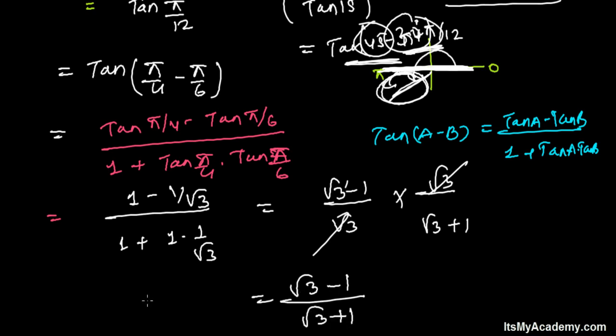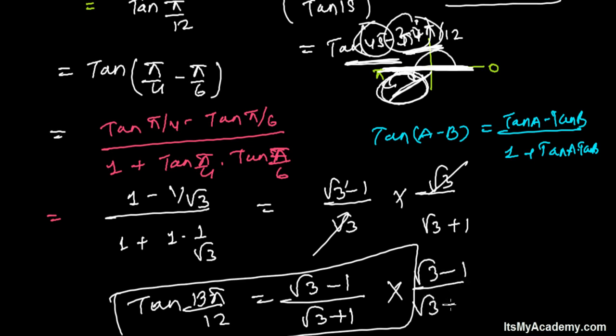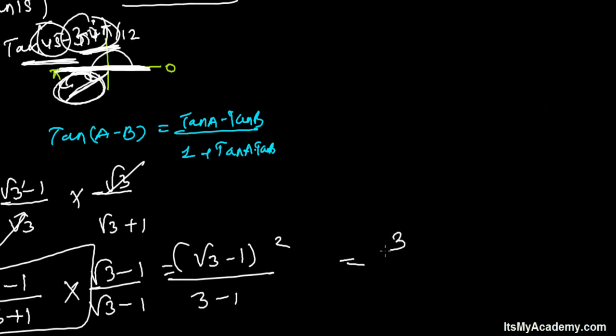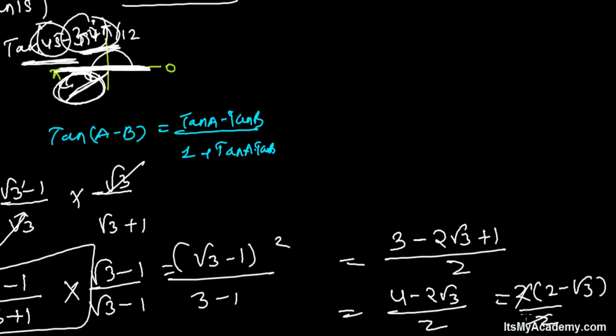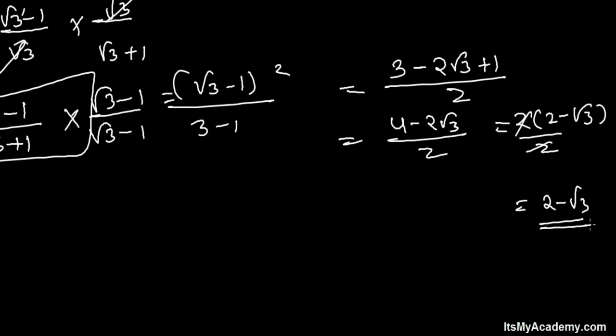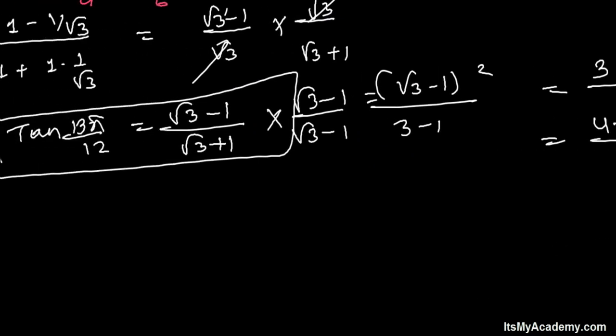So this is the value of tan(13π/12). If you want, you can rationalize further. Multiply by (√3 - 1), then it will be (√3 - 1)² divided by 3 - 1. That's (A - B)² = 3 - 2√3 + 1 divided by 2. That's 4 - 2√3 divided by 2. You can take 2 common, so it will be 2(2 - √3)/2, cancel the 2, and you're left with 2 - √3.